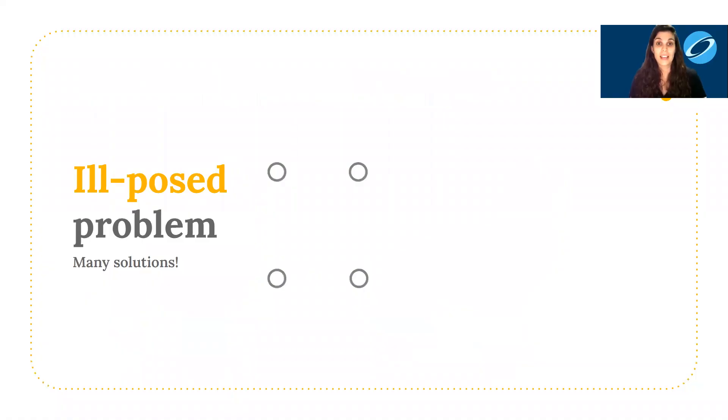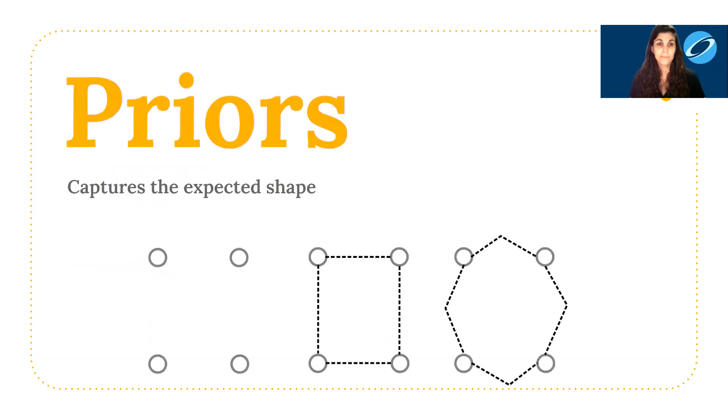Surface reconstruction has been studied extensively for 20 years. The key challenge is that the problem is ill-posed, which means there are many valid solutions. Consider four points sampled from some 2D curve. You can imagine that there are infinitely many solutions that pass through these four points.